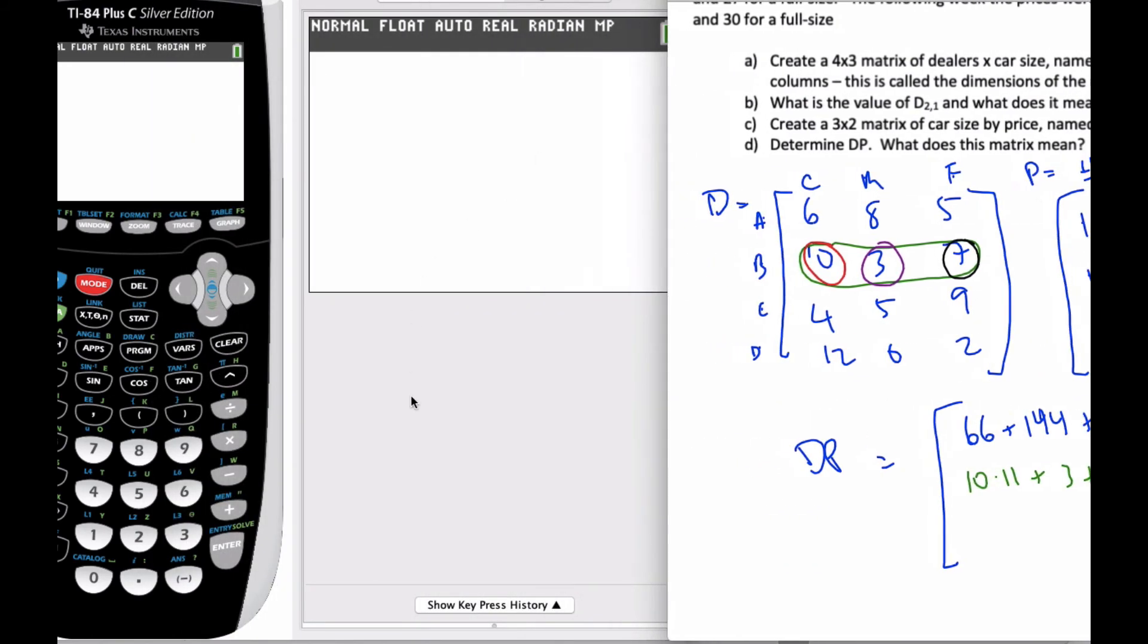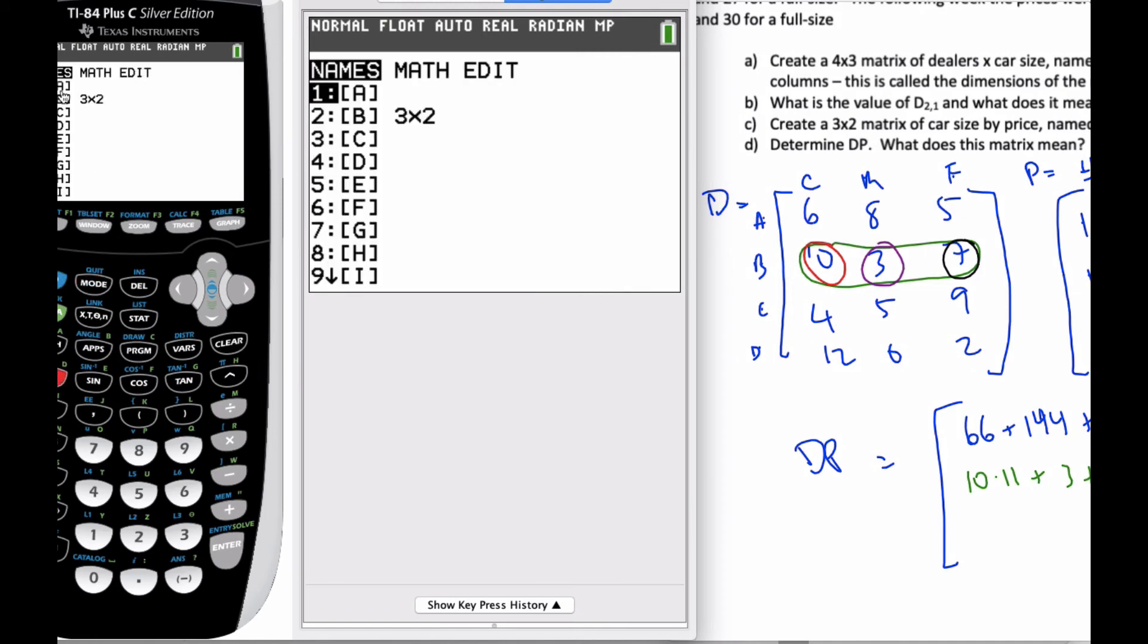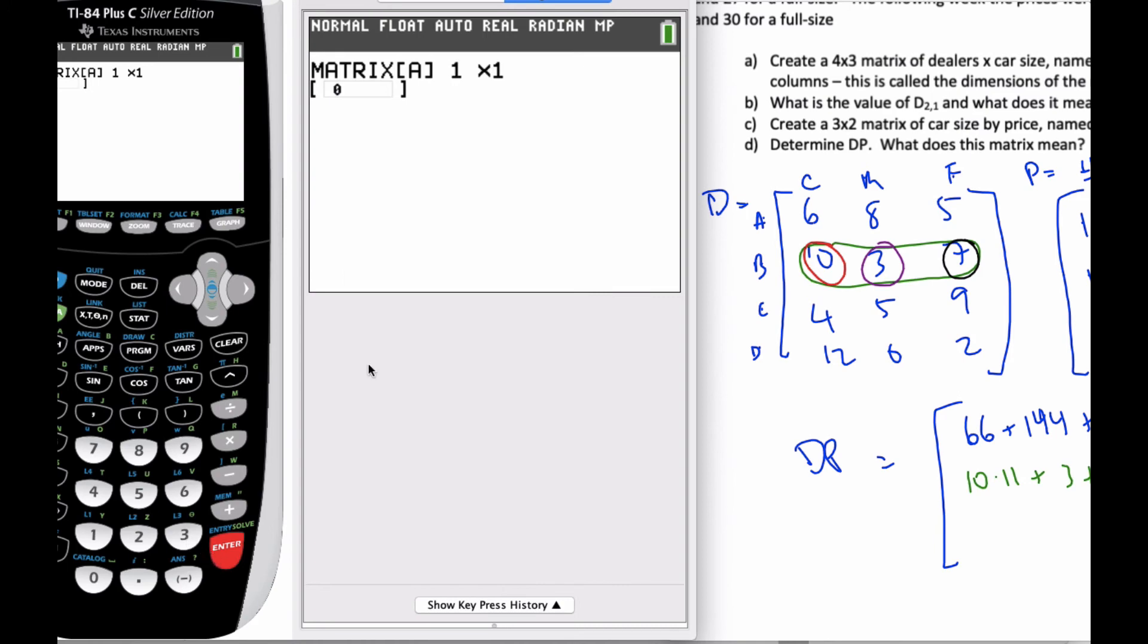Let's make sure we can see our matrix. There's a key here called matrix. I'm going to go to second matrix and edit A. And I want it to be four rows by three columns. And now it's just a matter of entering the data in: 6, 8, 5, 10, 3, 7, 4, 5, 9, and 12, 0, and 2. And so now I have that entered.